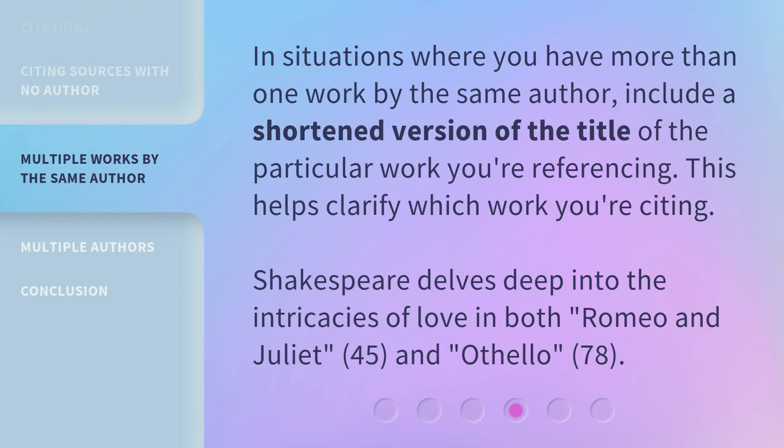In situations where you have more than one work by the same author, include a shortened version of the title of the particular work you're referencing. This helps clarify which work you're citing. For example: Shakespeare delves deep into the intricacies of love in both (Romeo and Juliet 45) and (Othello 78).